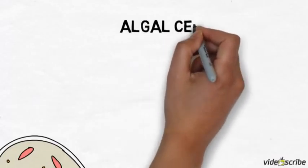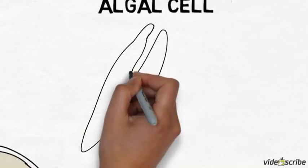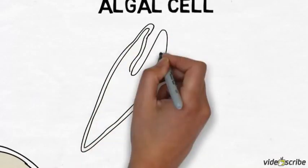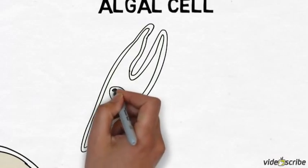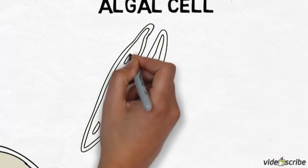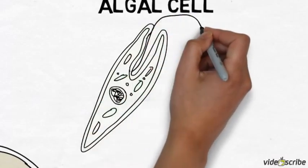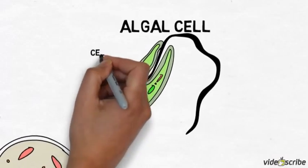The second cell type is an algal cell, and an algal cell looks more like a plant cell. It has a cell wall around the outside, it has chloroplasts, but what makes it different is that it can move. It has a flagellum, and the flagellum allows it to swim towards the light. It also has some light sensitive spots, which I haven't added to the picture, but which allow the algal cell to sense where the light is and then to swim towards the light.